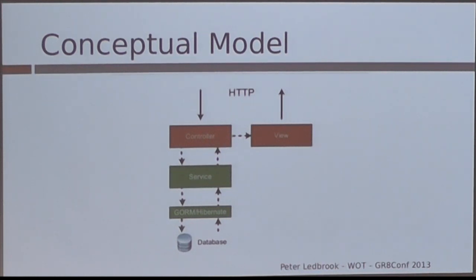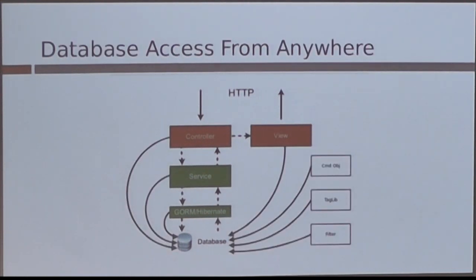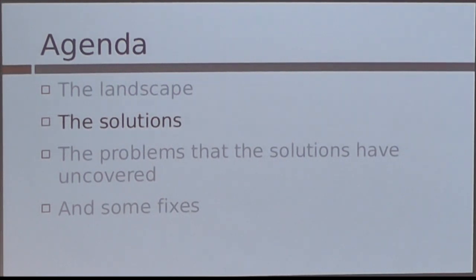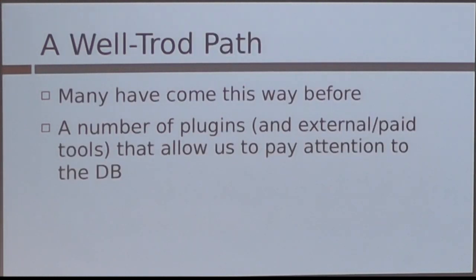Just to make sure we're all on the same page — this is a slide from Peter Ledbrook. This is a traditional conceptual model of what a Grails application is doing. A request goes to the controller, they go to the service, they talk to Hibernate, the response goes back up. What actually happens is that database access can be happening pervasively, and there are other artifacts throughout our application, which can potentially make it relatively complicated.